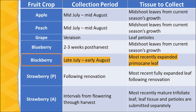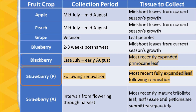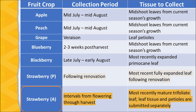With blackberries, we select the most recently expanded primocane leaf in late July to early August. For perennial strawberries, we sample following renovation and the most recently fully expanded trifoliate leaf is collected.